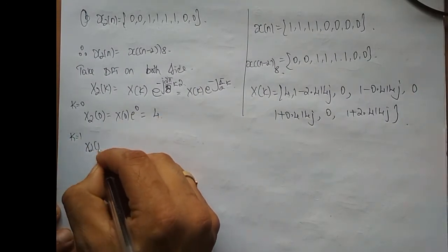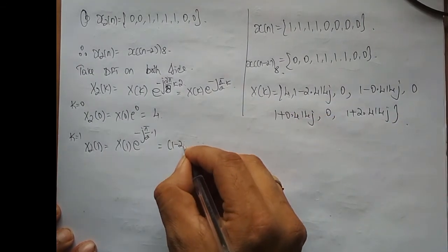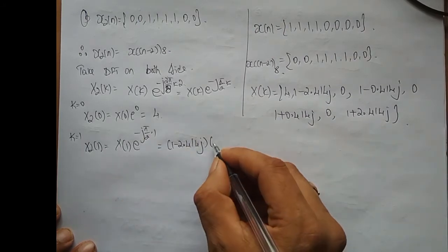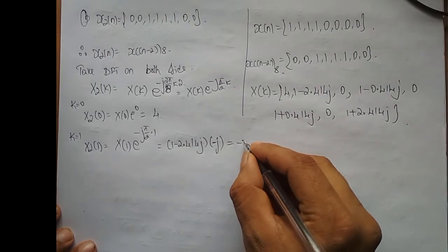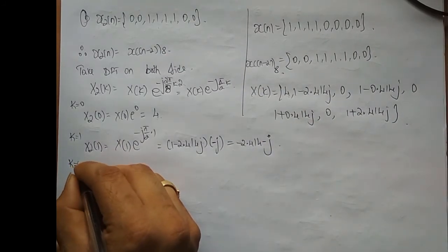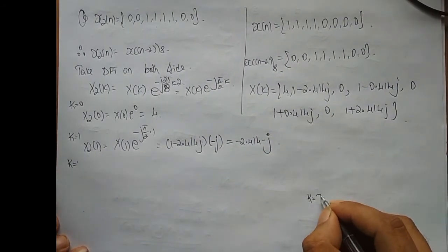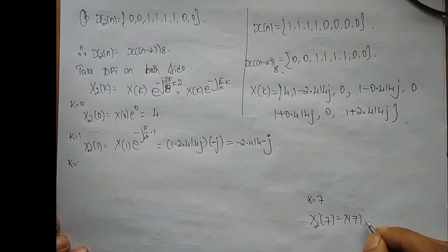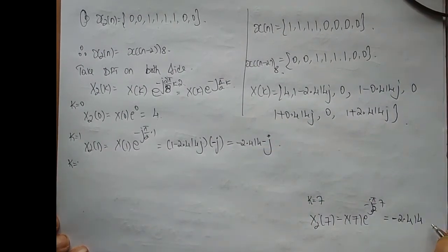For k = 1: X2[1] = X[1] · e^(-jπ/2). X[1] = 1 - 2.414j. So (1 - 2.414j) · e^(-jπ/2). Now cos(π/2) - j·sin(π/2) = -j. If you simplify this you get -2.414 - j. For k = 7 by complex conjugate symmetry: X2[7] = X[7] · e^(-j7π/2) = complex conjugate of X2[1] = -2.414 + j.